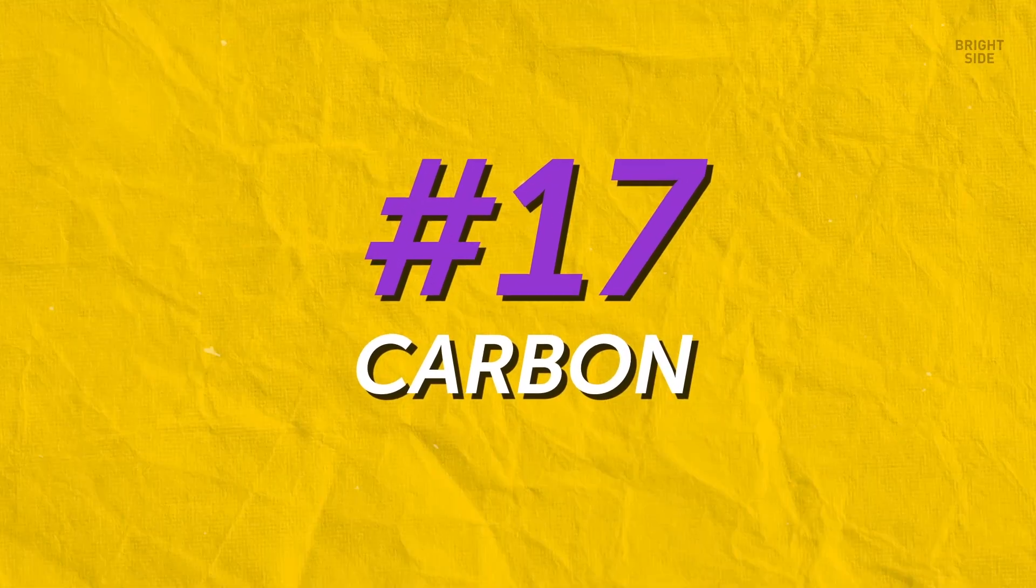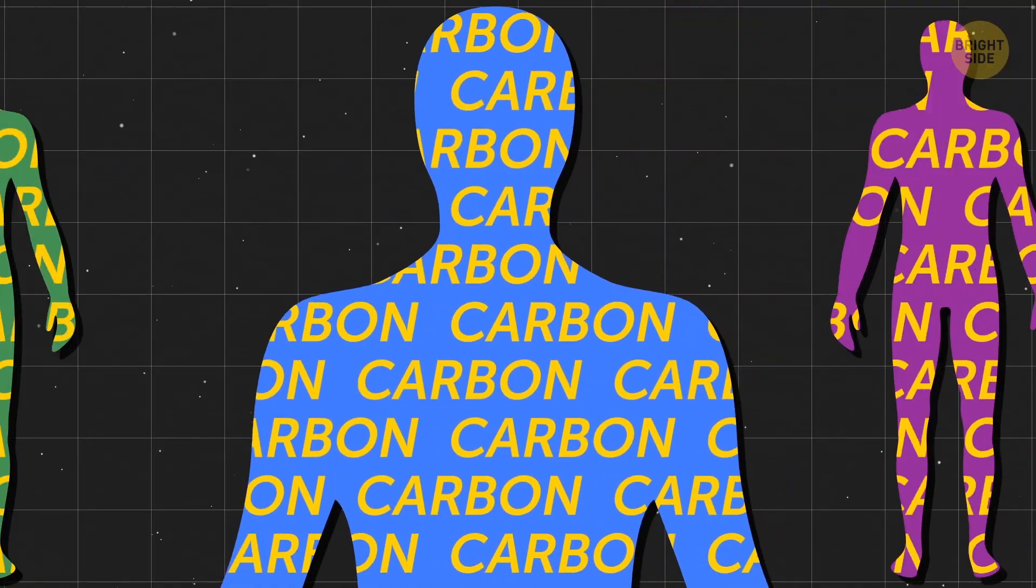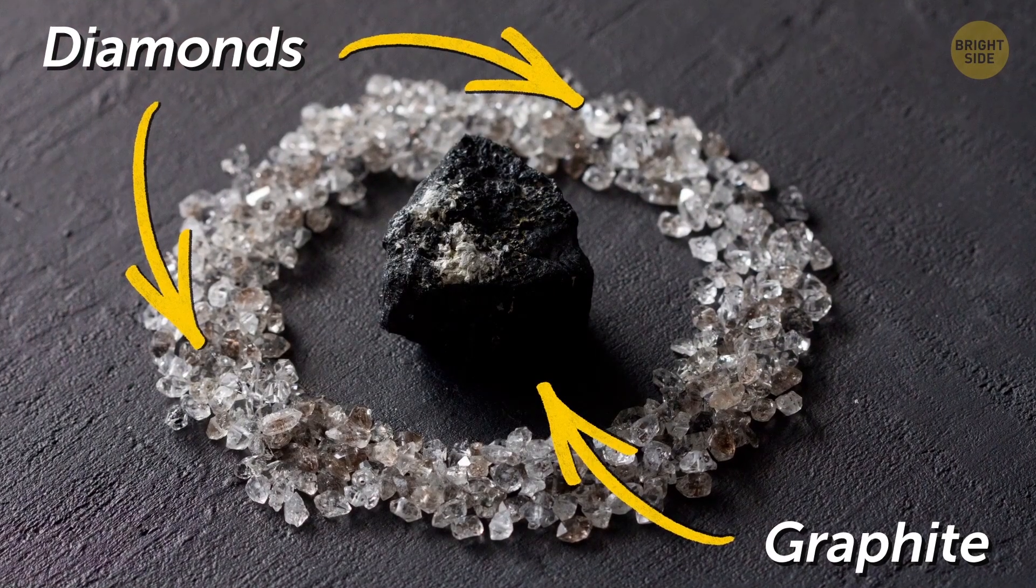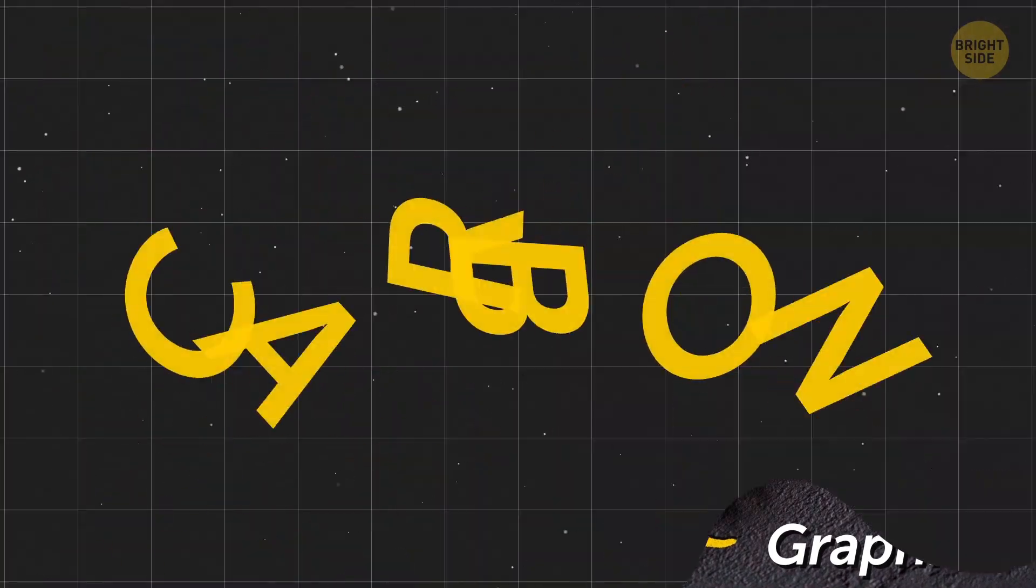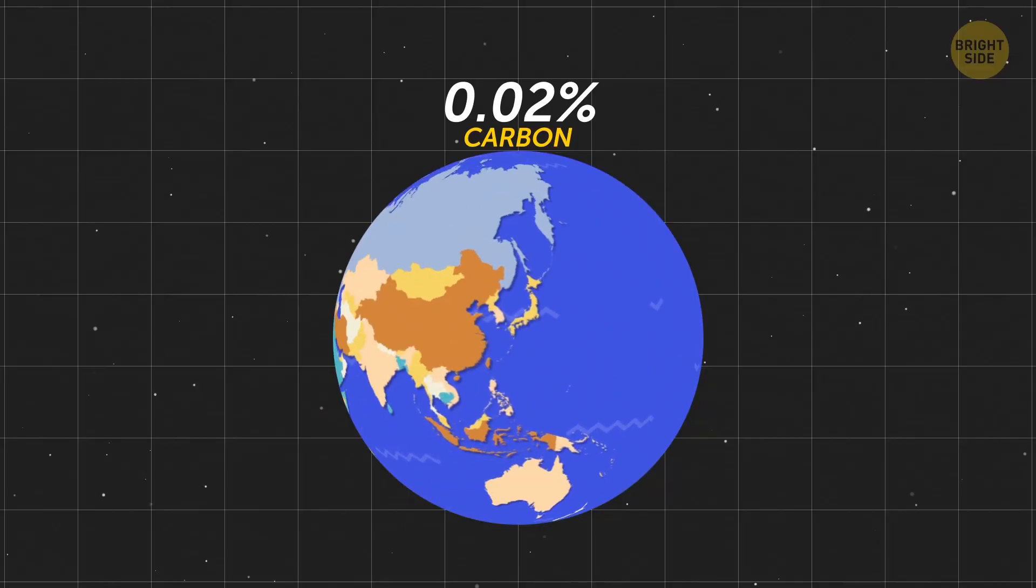The 17th most abundant element is carbon, which is also the second most common element in our bodies, holding 18% of its mass. In fact, it would be impossible for life to exist without carbon. But in the Earth's crust, it dips below zero, occupying only 0.02%.